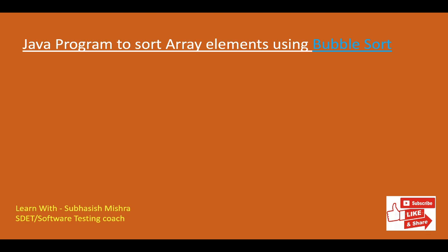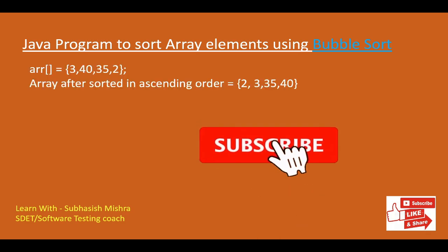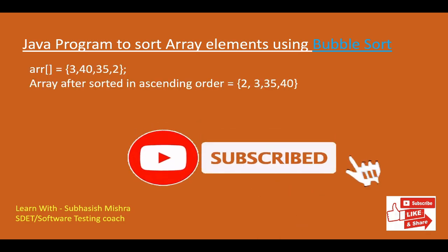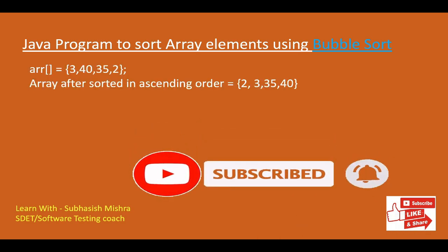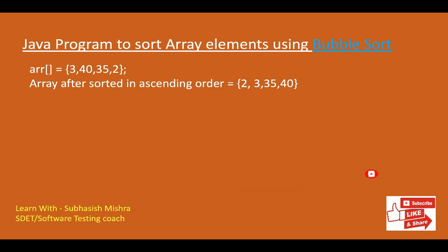Today we will learn a Java program to sort array elements using bubble sort. So here you can see one array having values 3, 40, 35 and 2. And once we sort in ascending order, we will get 2, 3, 35 and 40.